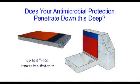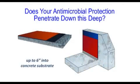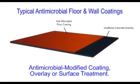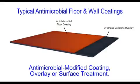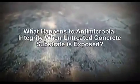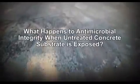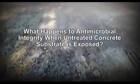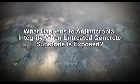Does your current antimicrobial protection penetrate down this deep? Typical antimicrobial floor and wall systems consist of an antimicrobial modified floor topping or surface treatment, providing a relatively thin antimicrobial barrier between your operation and your concrete substrate. But what happens to the antimicrobial integrity of this floor topping as it expands, cracks, dents or wears from extreme use, exposing the untreated concrete slab?